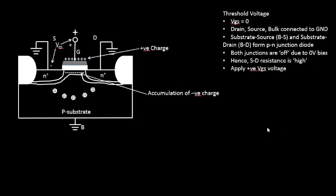Hello everyone, let's continue our discussion on threshold voltage. Let's take a moment to revise what we did in the last couple of lectures. We introduced an NMOS structure with heavily doped N-plus source and N-plus drain, four terminals: source, drain, gate, and body terminal, built on a P-type substrate. There was also an isolation region, and the gate was referred to as a polysilicon or metal gate.